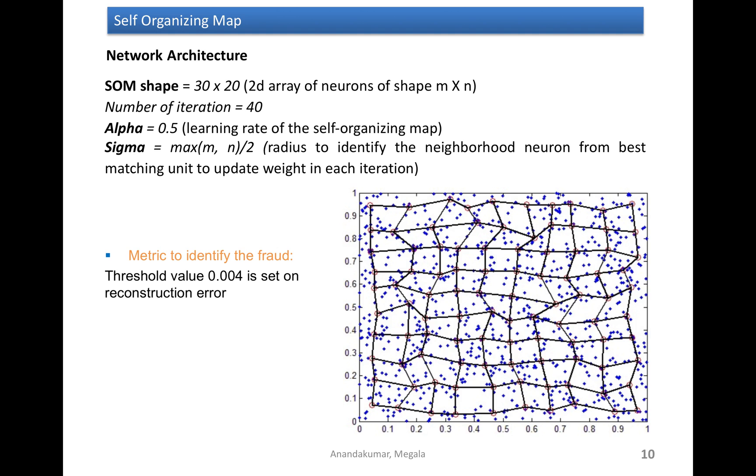Here is my self-organizing map. This is the architecture of my self-organizing map. The size of this map is 600. That means it has 600 neurons. And number of iterations, I kept it as 40. And alpha value, that is learning rate of this network, is 0.5.